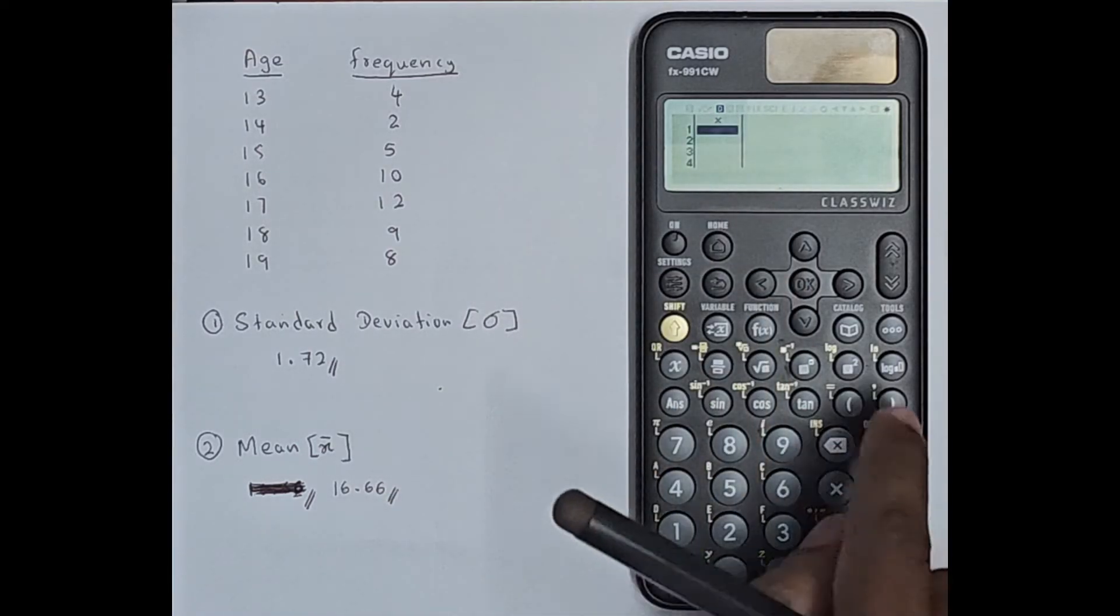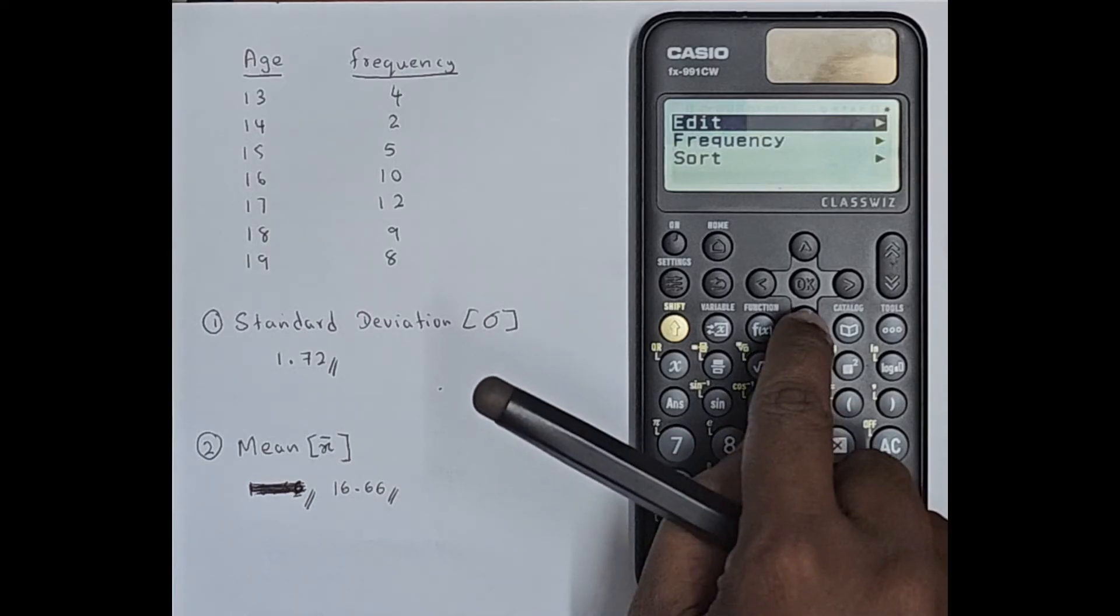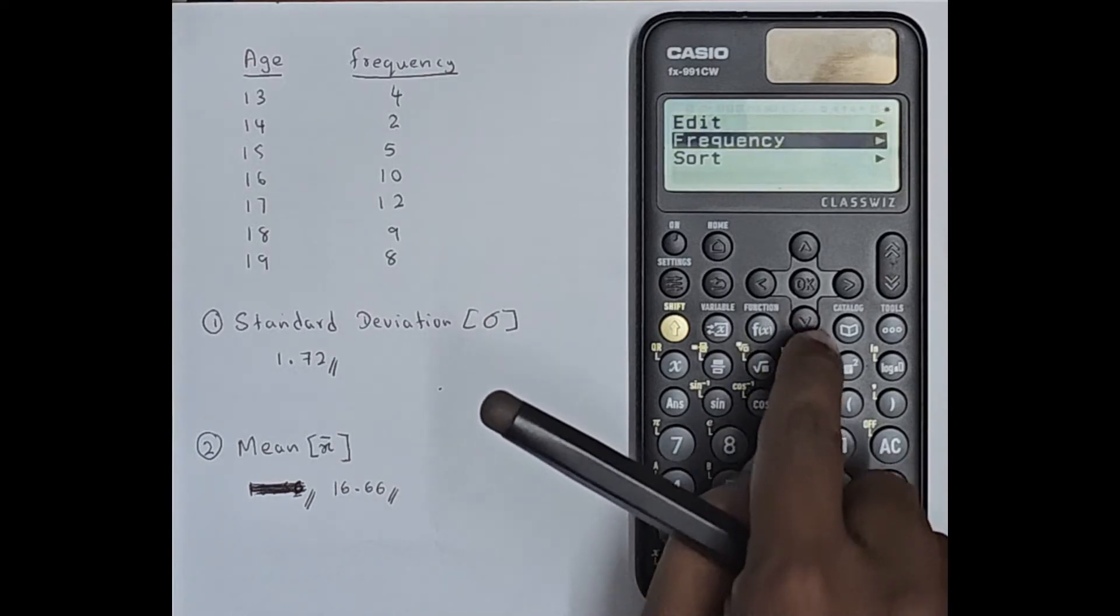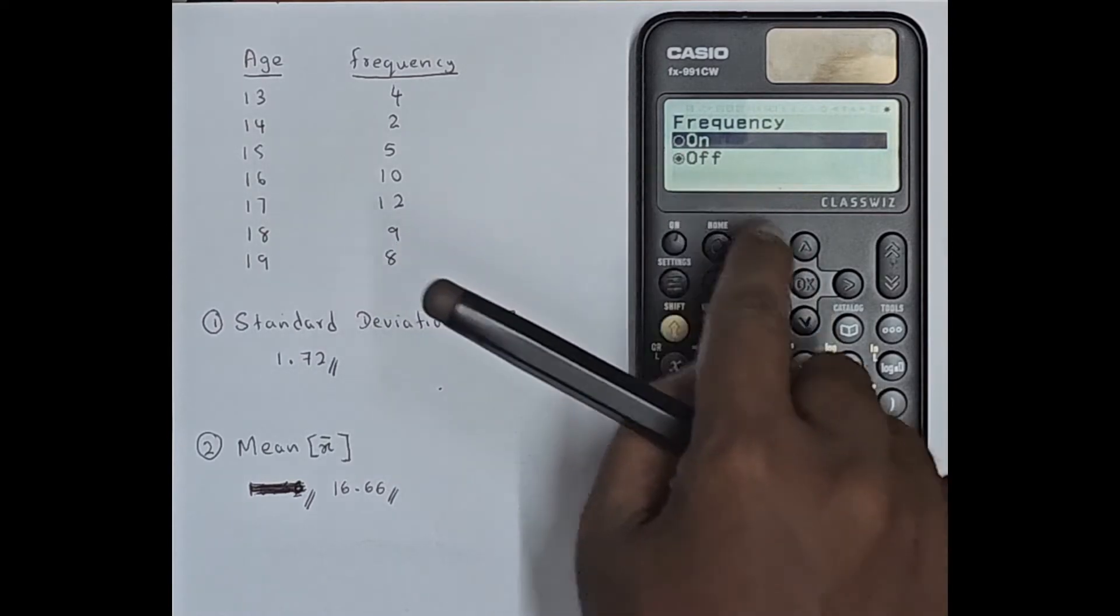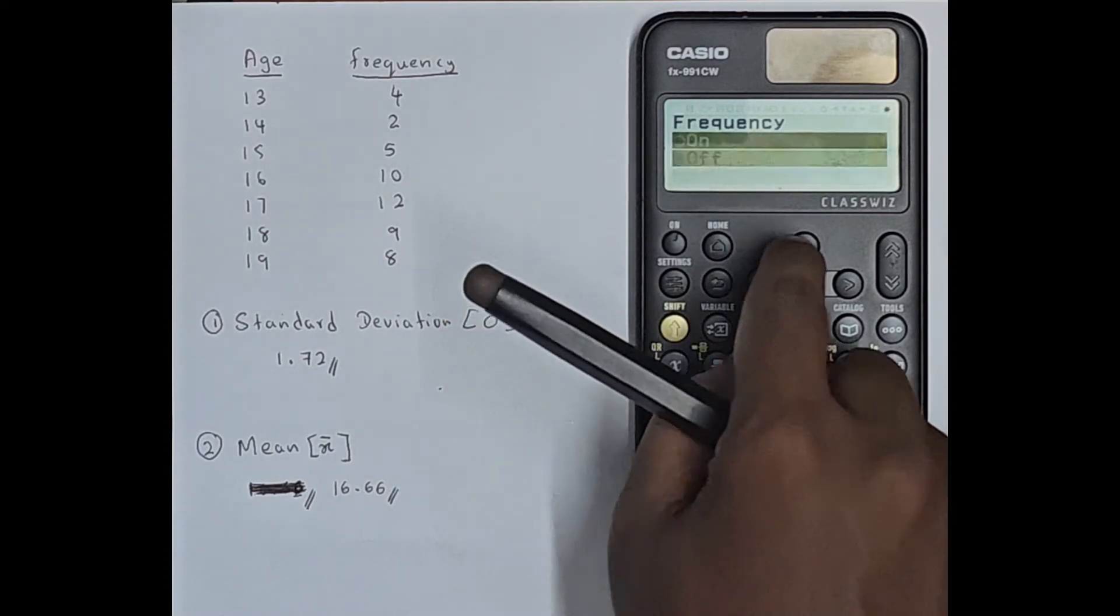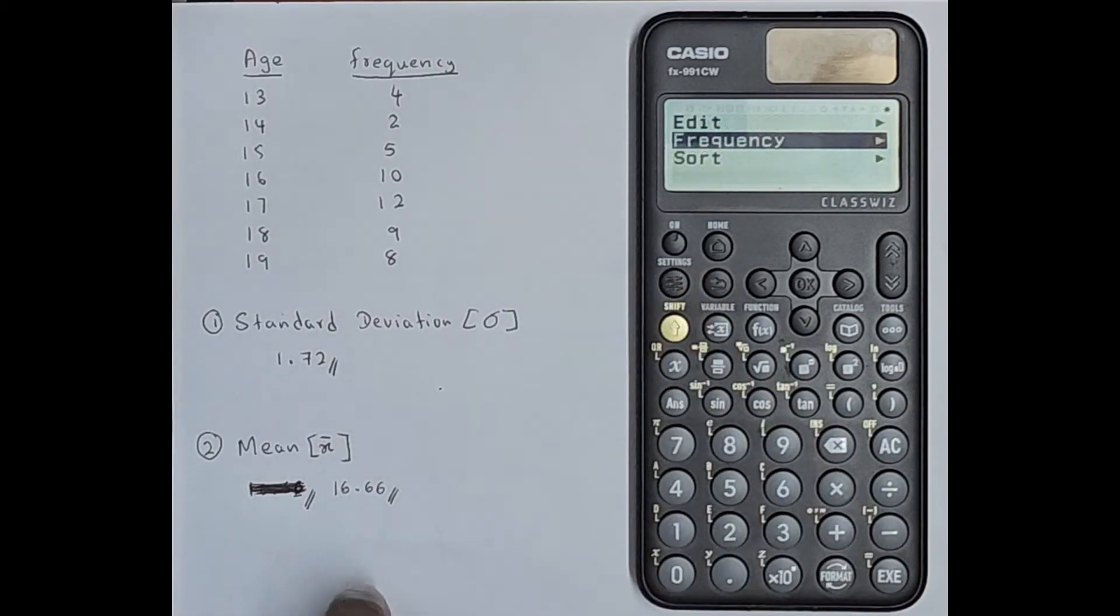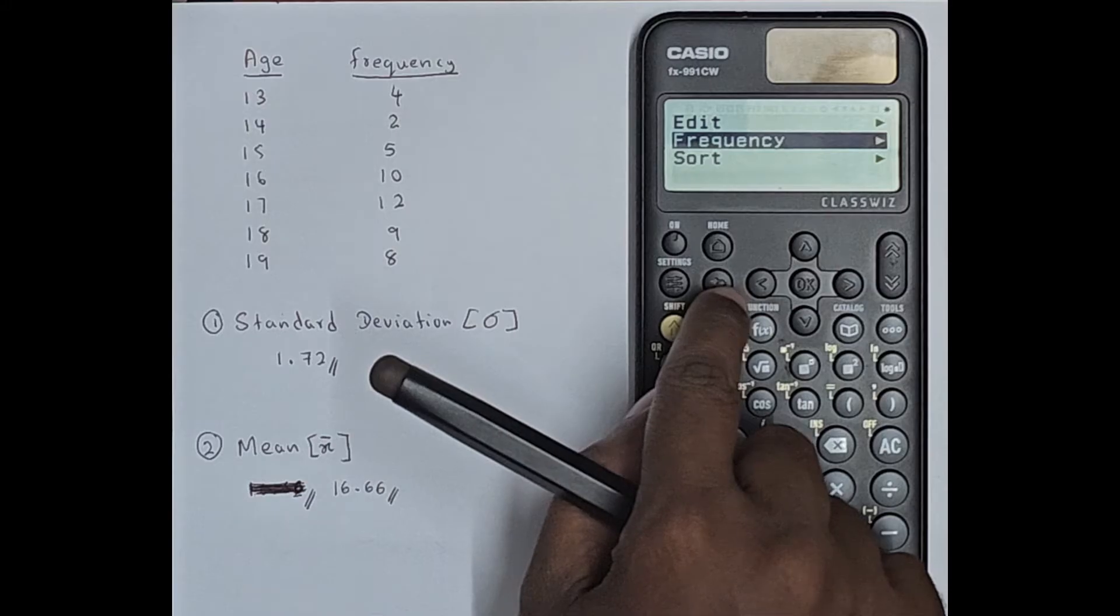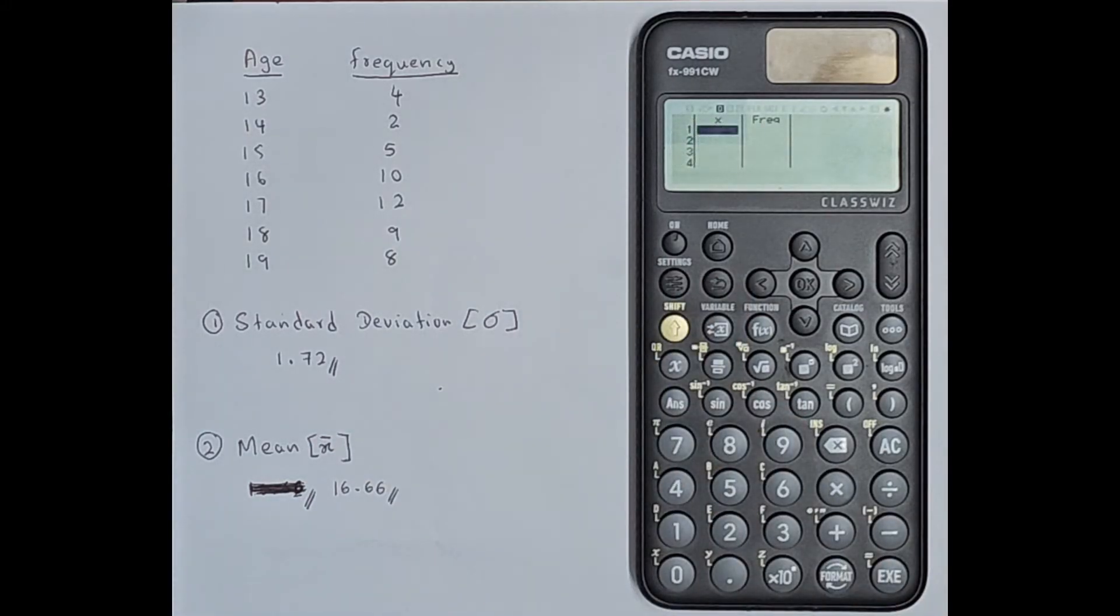So simply what you can do is press tools then using the arrow keys go to frequency, press OK. Now you can turn this on using the arrow keys then using this back button go to the previous screen. You have to click that back button two times to go to the previous screen.